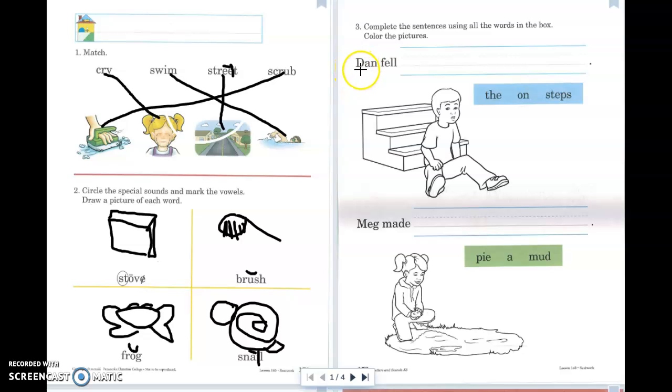So they give me two words. It says Dan fell. And the words in the box are the on steps.